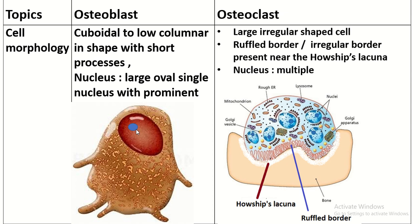The osteoclast is a large, irregular-shaped cell. Toward the bony surface, the surface is irregular, known as the ruffle border — these are irregular microvilli. Near it is the Howship's lacuna shape, which indicates that the osteoclast has started bone resorption.